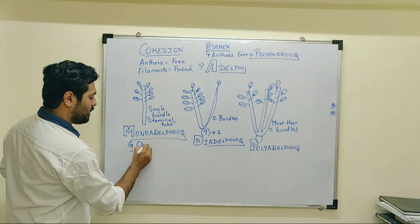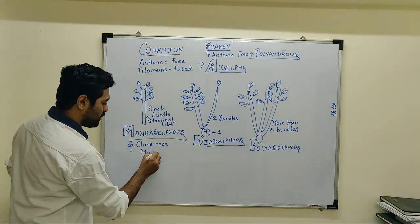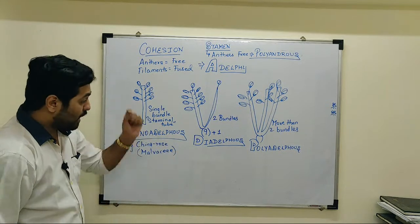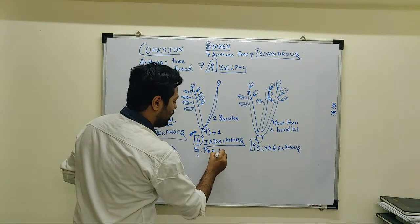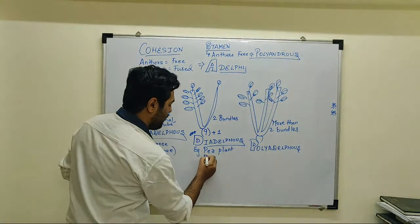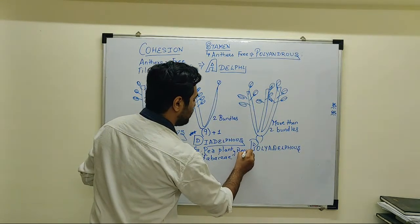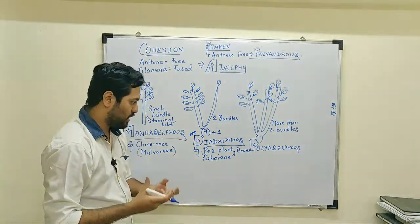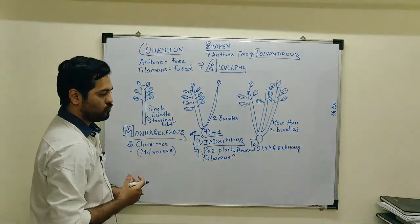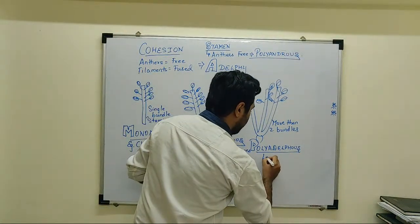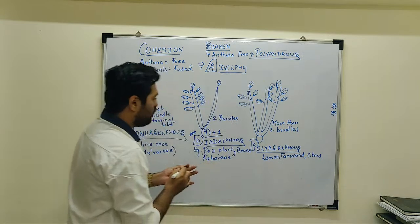The example of monadelphous condition frequently seen is China rose, that is Hibiscus rosa-sinensis, or in MCQs you may see the option Malvaceae family. For diadelphous condition, a very important example is pea plant, that is Pisum sativum — in options you may see Fabaceae or Leguminosae family. The nine-plus-one arrangement is seen in pea and beans; we will represent this in the floral formula as 9 in bracket plus 1. Polyadelphous condition is observed in lemon, tamarind, and citrus fruits.